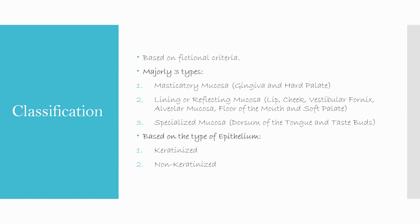The three types are: masticatory mucosa, lining or reflecting mucosa, and specialized mucosa. Masticatory mucosa is found on the gingiva and hard palate. This is called masticatory because the masticatory forces are directly applied on these structures. Then there is lining or reflecting mucosa.